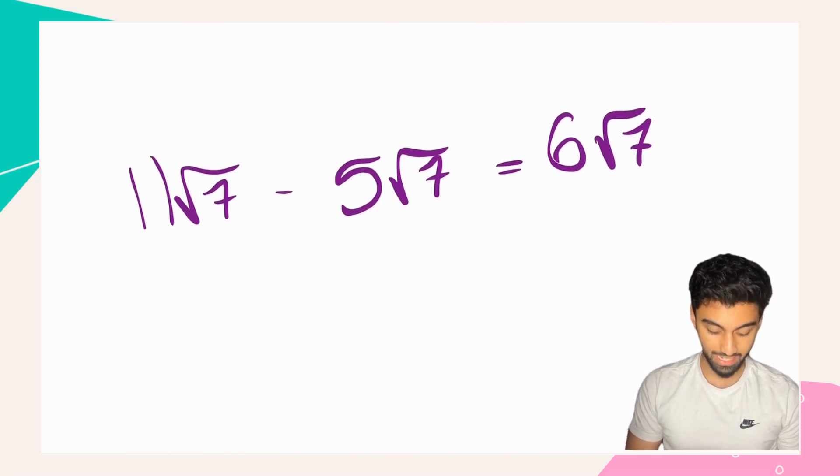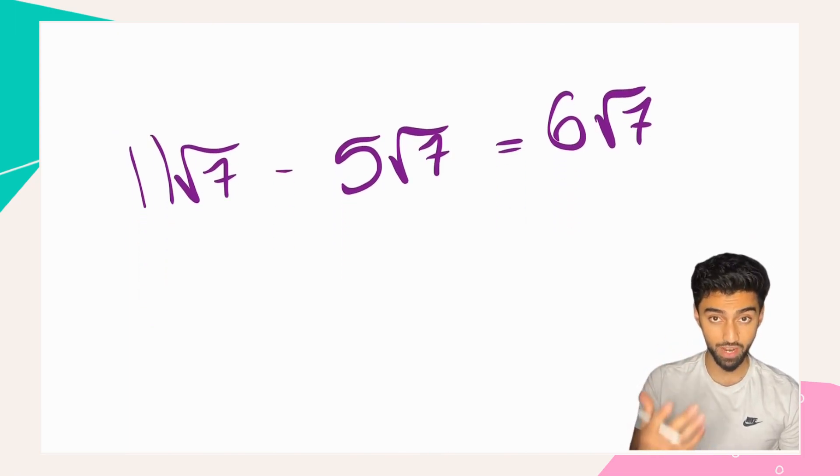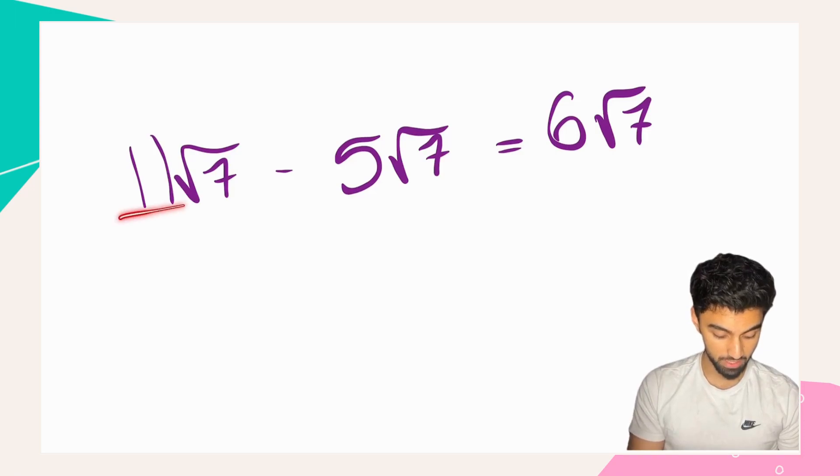Similarly, if we have something like 11√7 subtract 5√7, again the thirds are the same, so we simply go ahead and we subtract the coefficients.